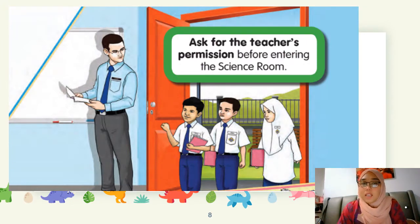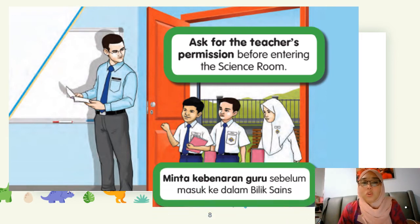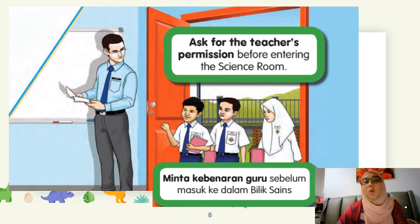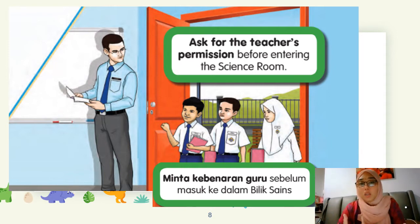The third rule in the science room: you have to ask for the teacher's permission before entering the science room. Awak perlu minta kebenaran guru sebelum masuk ke dalam bilik sains. For example, if you are late to go into the science room, you have to knock the door and beri salam — 'Assalamualaikum cikgu, boleh saya masuk?' or 'Excuse me teacher, can I come in?' Kalau awak keluar pergi tandas, awak pun perlu minta kebenaran daripada cikgu, supaya cikgu tahu di mana keberadaan awak. When you come back from the toilet, you have to knock the door and ask whether you can come in to the science room.